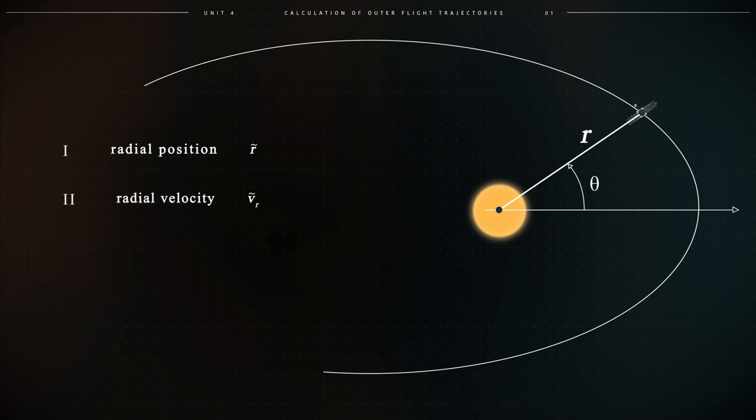Two, radial speed vr, that is the speed of the spacecraft in the radial direction. Three, angular position theta. Four, angular speed omega, that is the rapidity with which the angle theta varies over time.